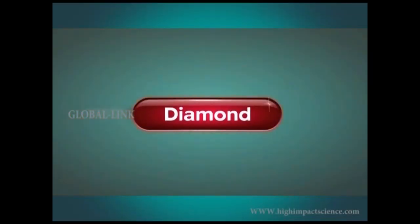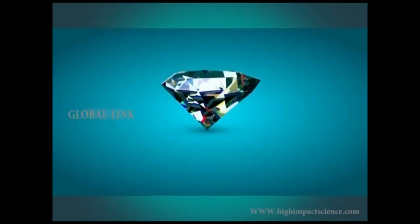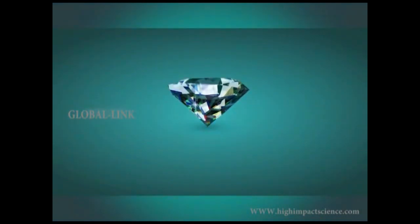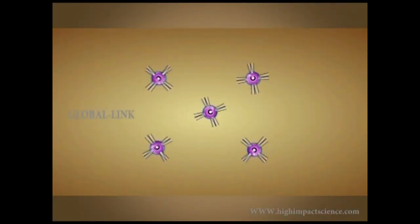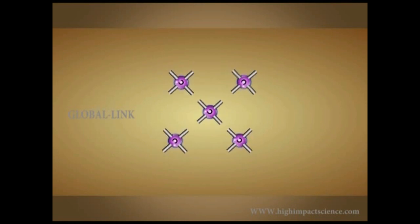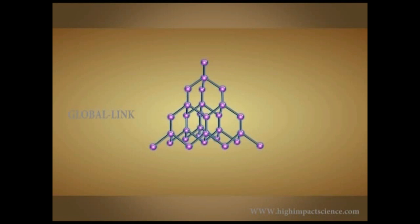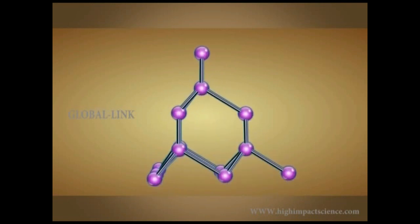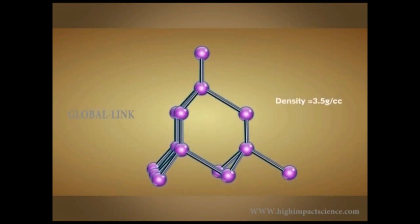Diamond is the hardest form of crystal carbon. In diamond, each carbon atom is bonded to 4 other carbon atoms by covalent bonds, forming a rigid 3-dimensional structure. Diamond's density is 3.5 grams per cubic centimeter.